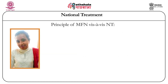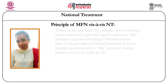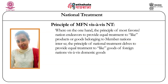What is the difference between national treatment and the most favoured nation treatment of the GATT? Where on the one hand the principle of most favoured nation endeavours to provide equal treatment to like products or goods belonging to member nations inter se, the principle of national treatment delves to provide equal treatment to like goods of foreign nations vis-à-vis domestic goods.